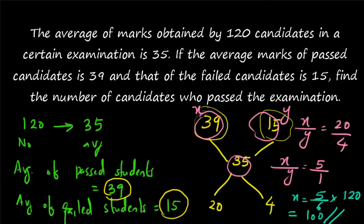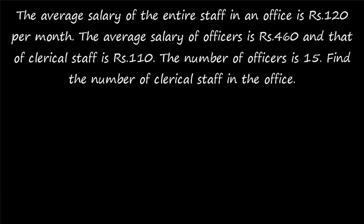So x will be equal to 5 divided by 6 into total number of candidates, which is 120. So 5 by 6 into 120 gives 5 into 20, which is equal to 100. So 100 is the number of passed candidates. By using the principle of allegation, you can easily find this answer within seconds. Second question: the average salary of the entire staff in an office is rupees 120 per month. The average salary of officers is rupees 460 and that of clerical staff is rupees 110. The number of officers is 15. Find the number of clerical staff.